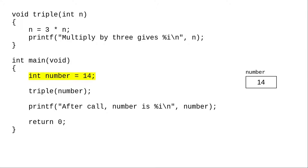First, number is set to 14. The next line calls the triple function with number as the argument. When the triple function is called, it needs an integer parameter n, and it creates that variable.